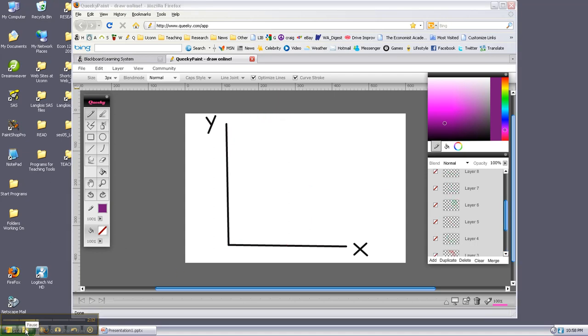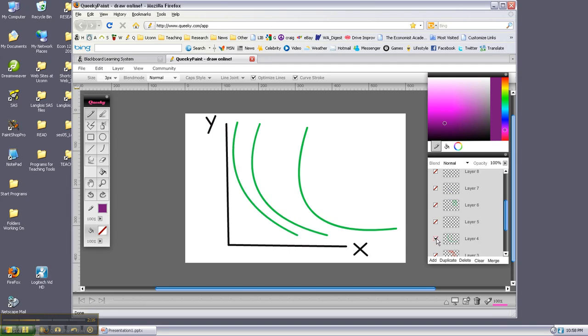Now let's put the indifference curves into this space. We know they go from left to right. And let's also look at the slope properties of an indifference curve. An indifference curve along it, total utility is constant. This would be the equation.